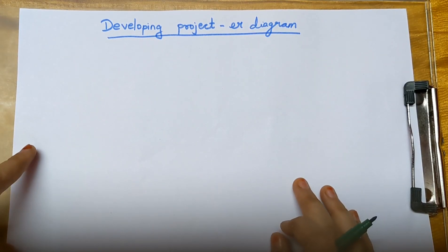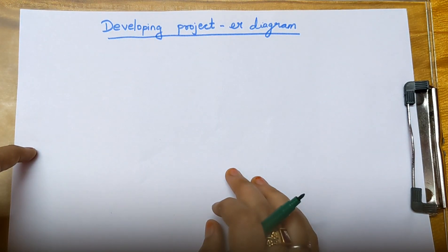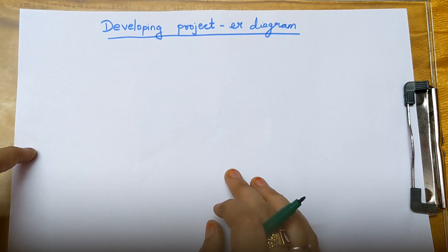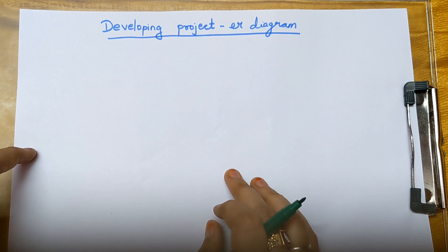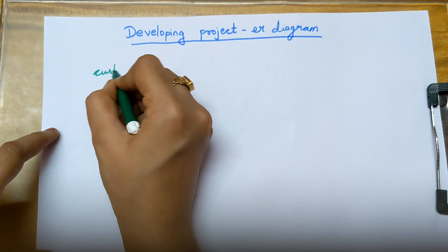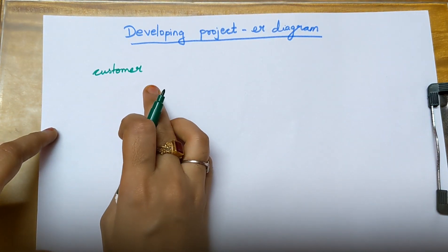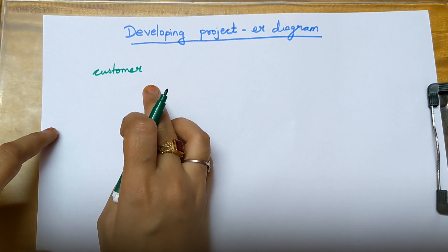In this video, let us learn to draw an ER diagram for the topic developing project. The first step is we need to identify the entities. An entity is nothing but an object with physical or conceptual existence. For developing project, customer will be an entity. A customer is a person — a person is physically existing, therefore customer is an entity.